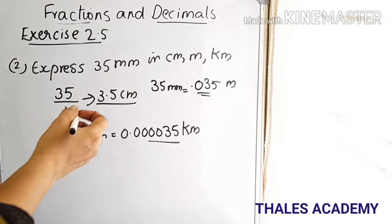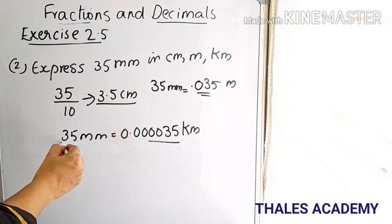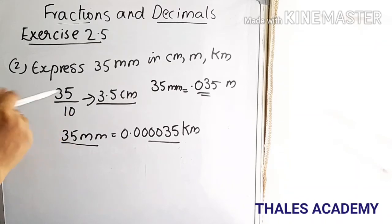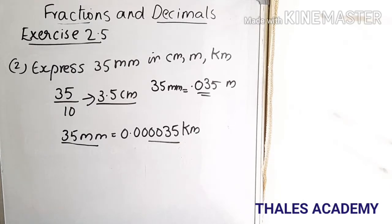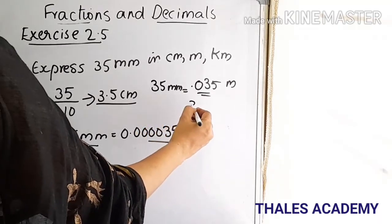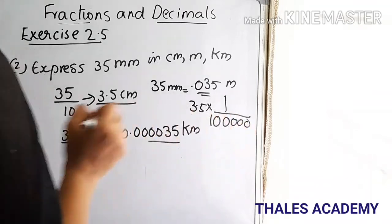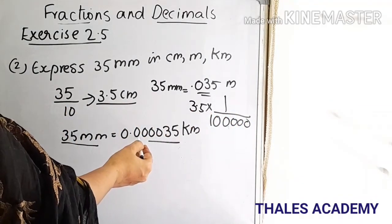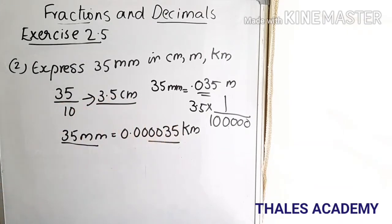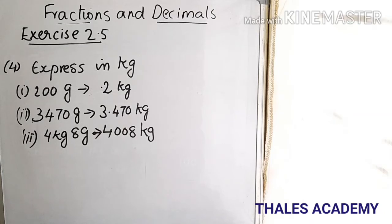To convert 35 millimeters into kilometers, we first convert to centimeters: 3.5 centimeters. To convert centimeters into kilometers, we multiply by 0.000001 or divide by 1 lakh. So 3.5 into 1/1 lakh gives us 0.0000035 kilometers.